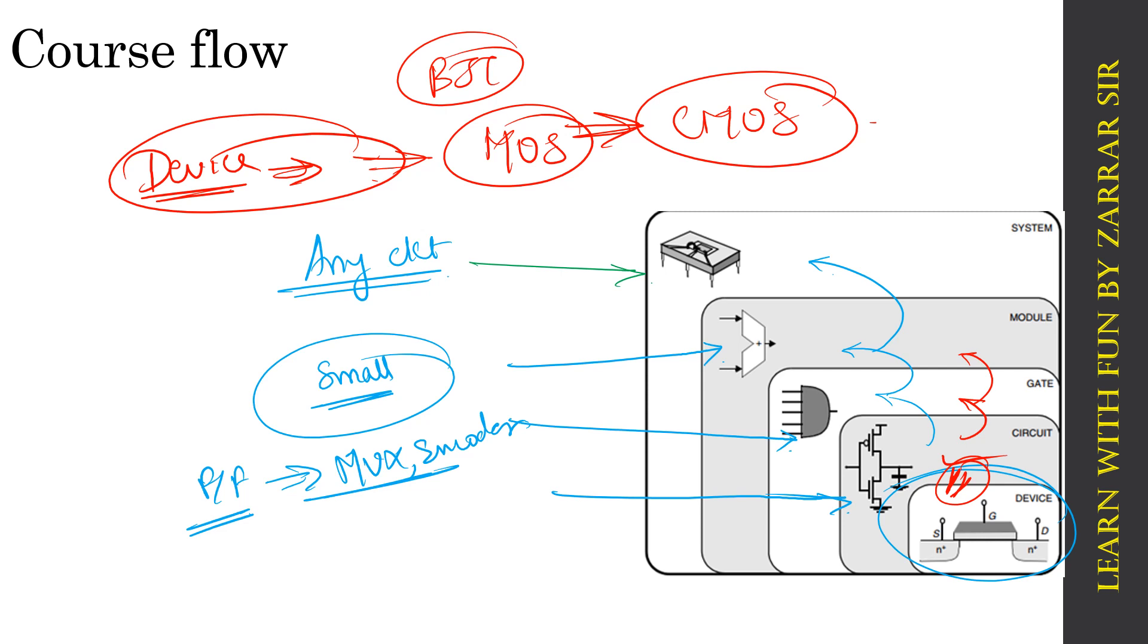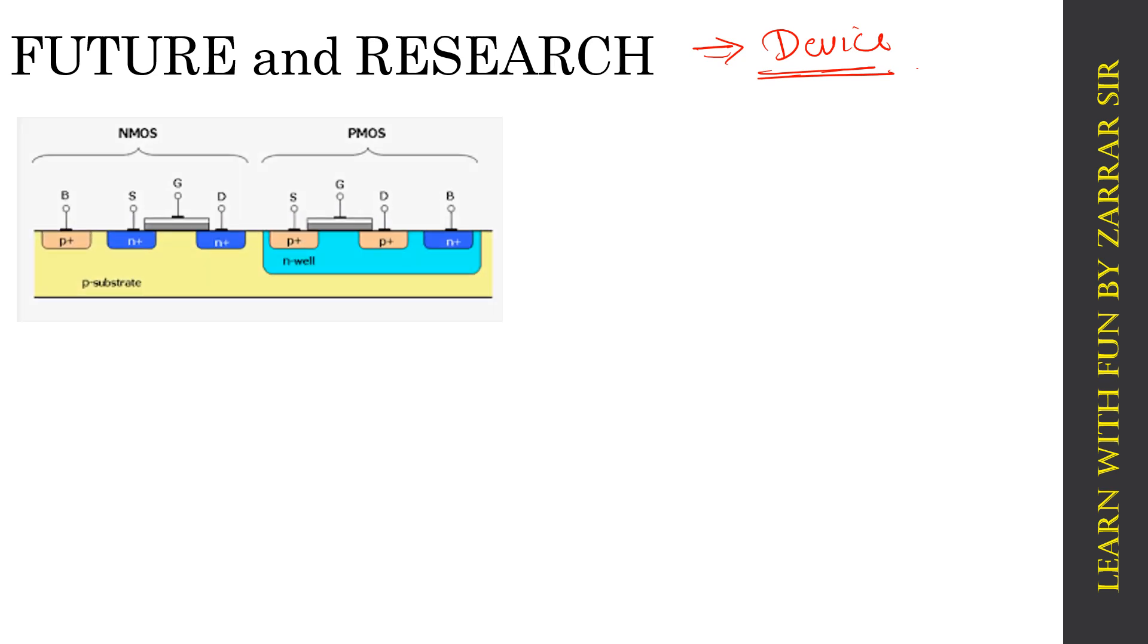So the next part - hope you have understood the course flow. Students will be understanding device, then circuit, then gates and modules, and then system. At the end of this course, you will be designing a system - either operational amplifier, differential amplifier, RAM, memory, flip-flop, encoder, decoder, whatever you want. Then let's move further - future and research. This is an interesting part. As I talked about, we will be discussing in this course the thought of device. I want everyone to understand: do we have any future if I work into device level or research level?